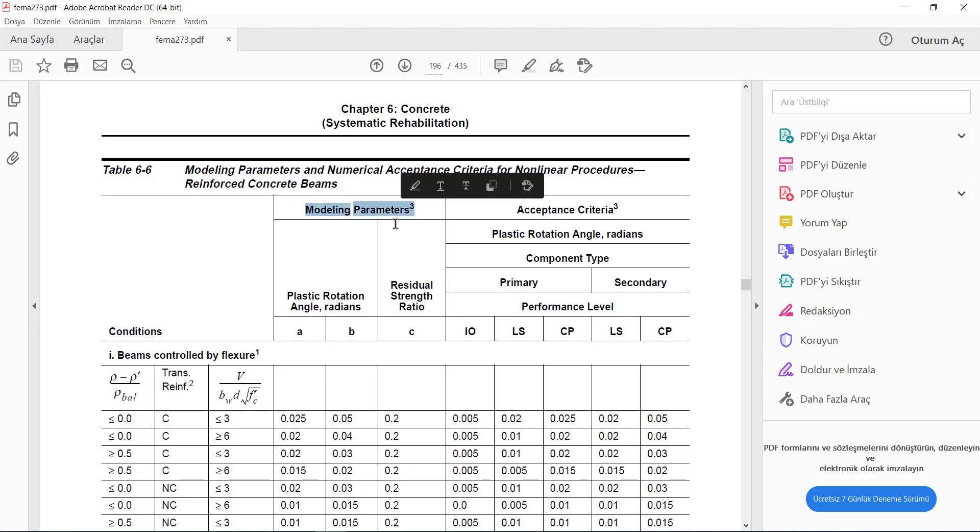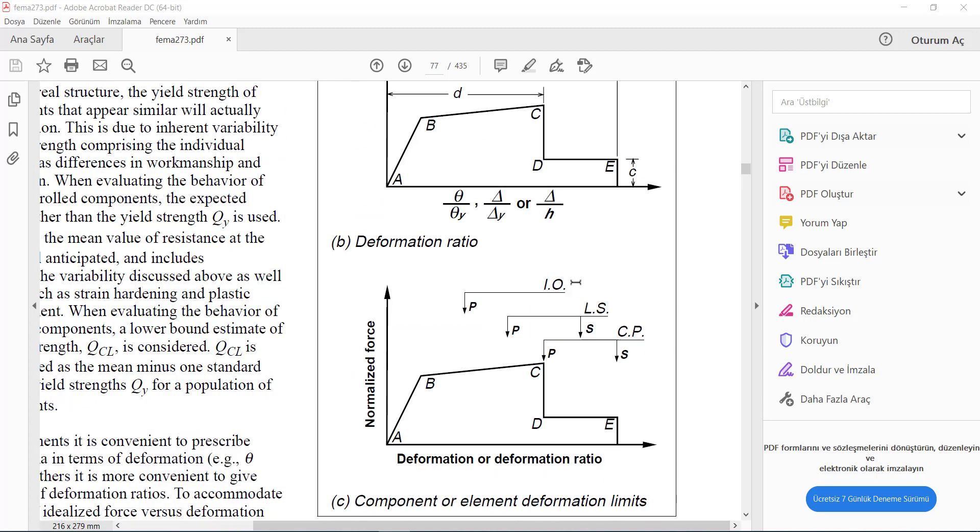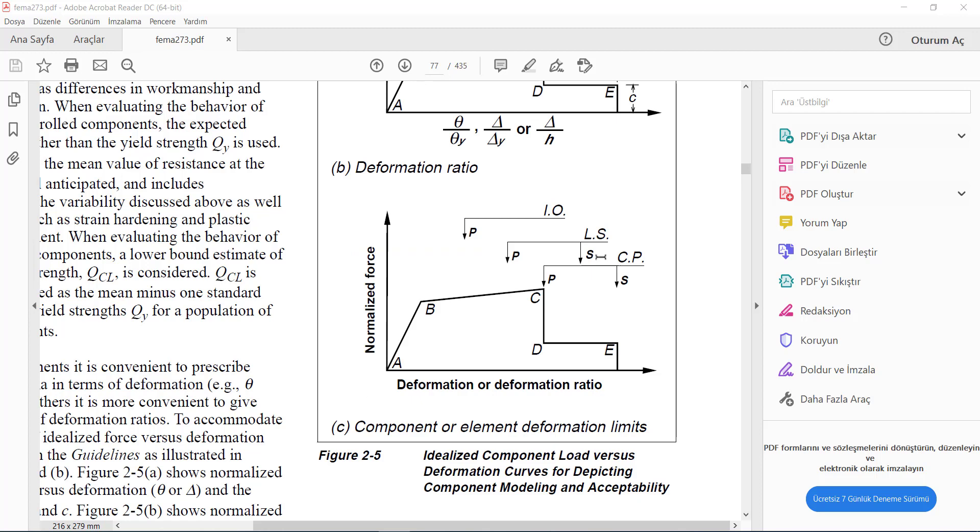Here are the modeling parameters A, B, C, and here is the acceptance criteria. To understand the meaning of A, B, C, and IO, LS, CP, figure 2-5 explains all these parameters.